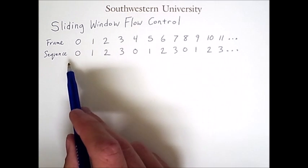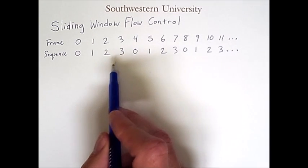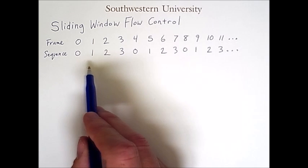Because we are using frame numbers 0 through 3, our window size will be 3. In other words, one less than the number of distinct sequence numbers.